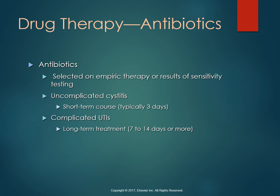Drug therapy is summarized on table 45-4. Antibiotics are used because it's mostly E. coli or bacteria causing these UTIs. For uncomplicated cystitis with no risk factors, we do a three-day antibiotic course. For complicated UTIs it's much longer — one or two weeks — depending on the drug used and the complications present. The first choice for uncomplicated UTI is Bactrim, or trimethoprim-sulfamethoxazole. For complicated UTIs, a common one used is nitrofurantoin, or Macrodantin, or fosfomycin.